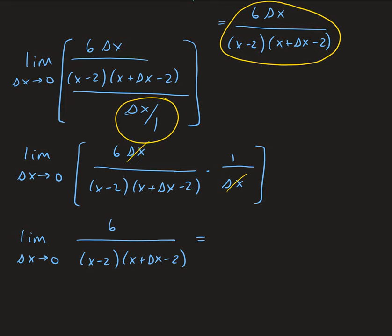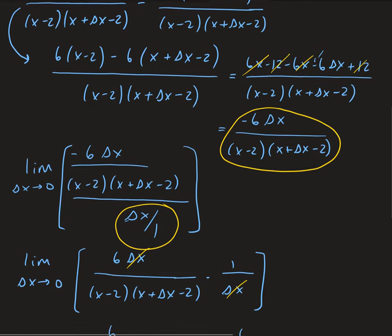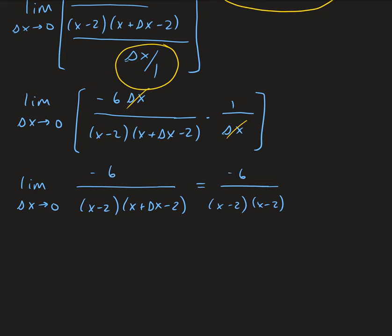Doing a direct substitution and letting delta x approach 0, we get negative 6 over x minus 2 times x minus 2, which gives us negative 6 over x minus 2 squared. This is the derivative of our function.